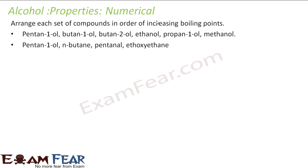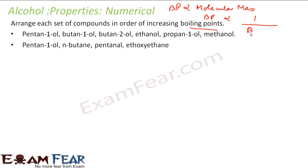Now we will take some numerical examples. We have to arrange these compounds in order of boiling point: pentane-1-ol, butane-1-ol, butane-2-ol, ethanol, propanol, and methanol. Boiling point is directly proportional to molecular mass and inversely proportional to branching.